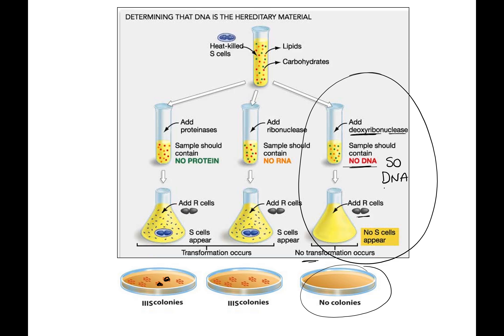DNA was the genetic material. Genetic material has to store information — the DNA had information to turn R cells into S cells. It has to be replicated, as shown by the inherited colonies of thousands of bacterial cells. And it shows variation, since there is different DNA for R cells and S cells.